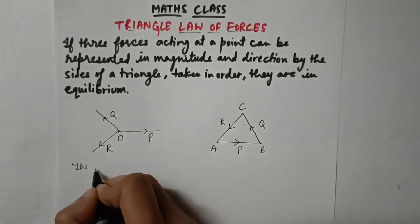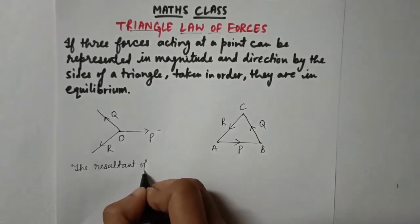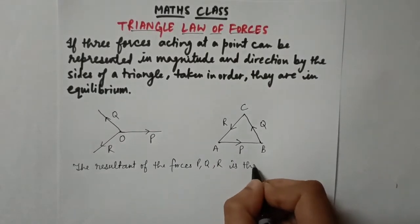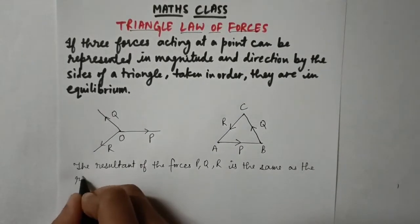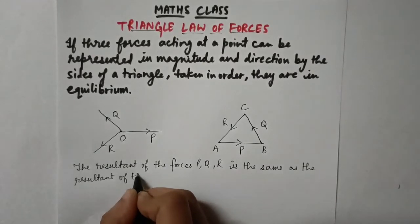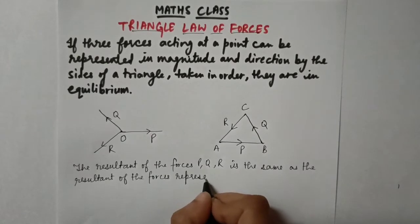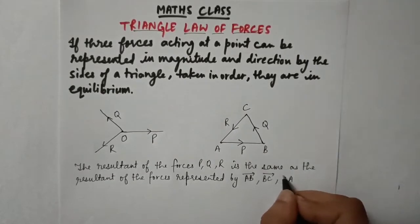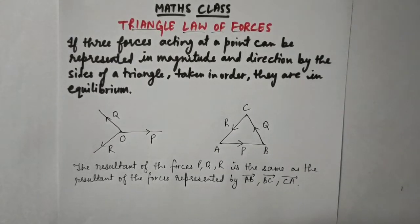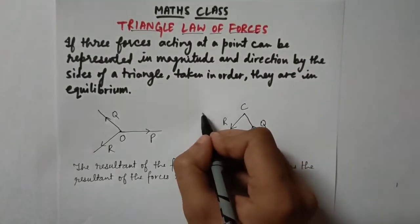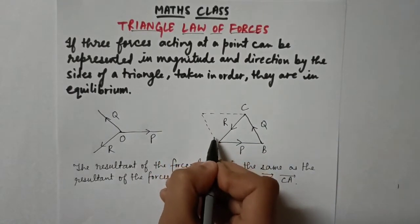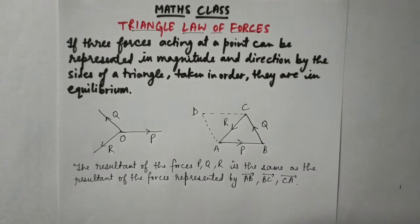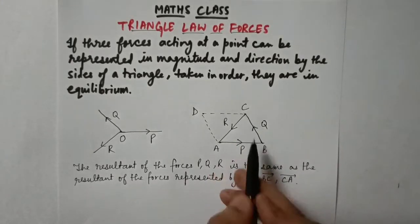This means that the resultant of the forces P, Q, and R will be the same as the resultant of the forces represented by AB vector, BC vector, and CA vector. Now let's complete the parallelogram. Let this point be D, so ABCD is a parallelogram. As we know, the opposite sides of a parallelogram are equal, so BC will be equal to AD.